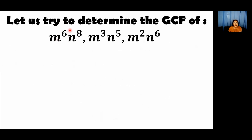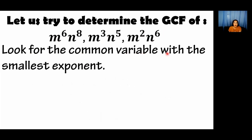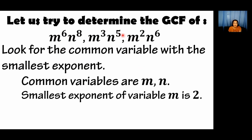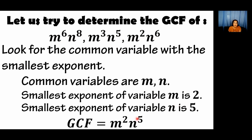Another example: m to the 6th power, n to the 8th power; m cubed, n to the 5th; m squared, and n to the 6th. Look for the common variable — common sa kanila yung m at n. Then look for the smallest exponent. For m, we have exponents 6, 3, and 2 — the smallest is 2. For n, we have 8, 5, and 6 — the smallest is 5. So ang ating GCF is m squared and n to the 5th power.